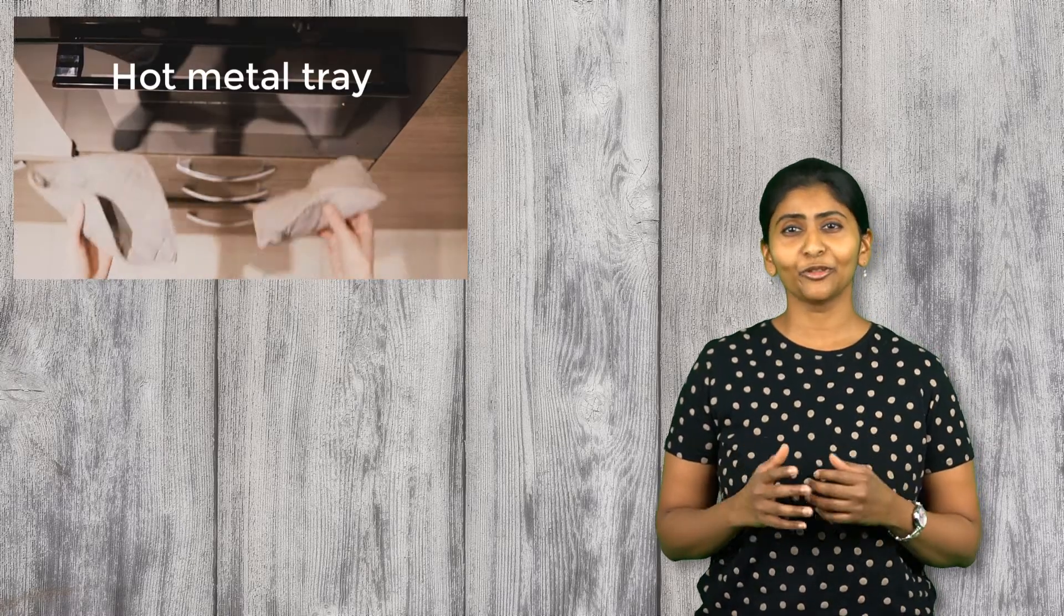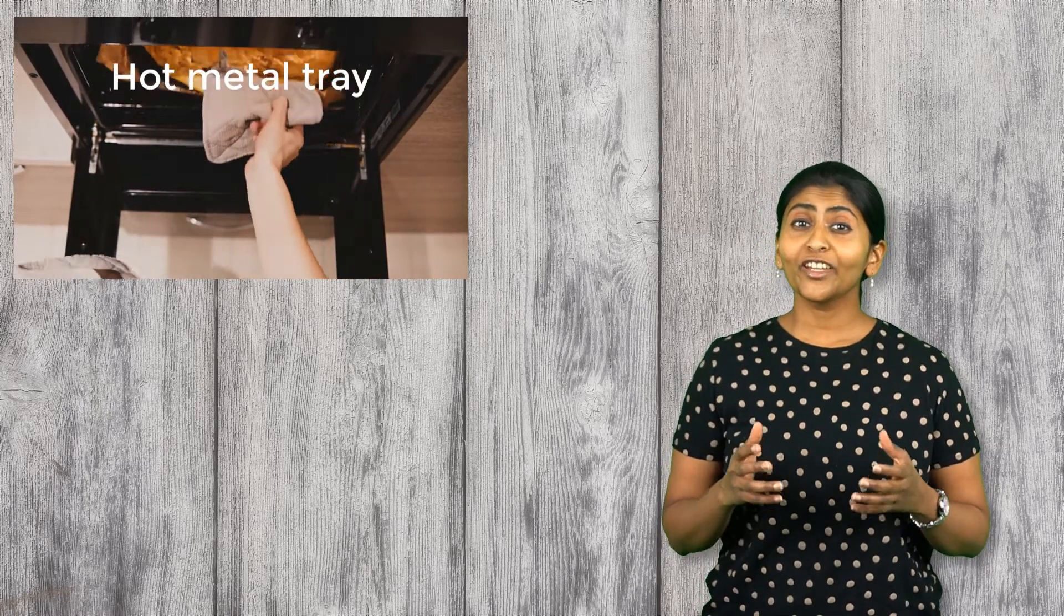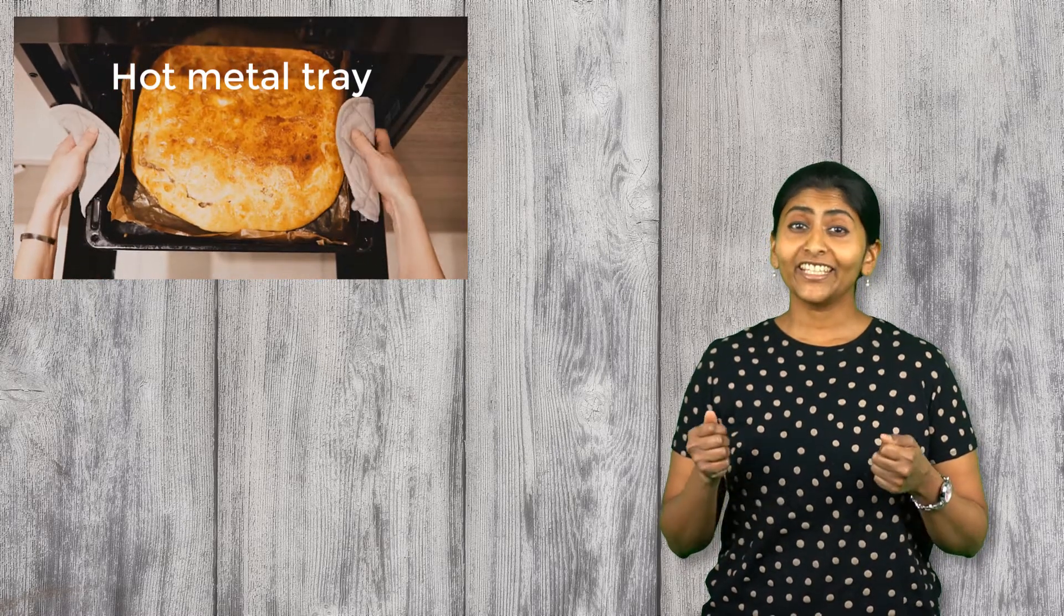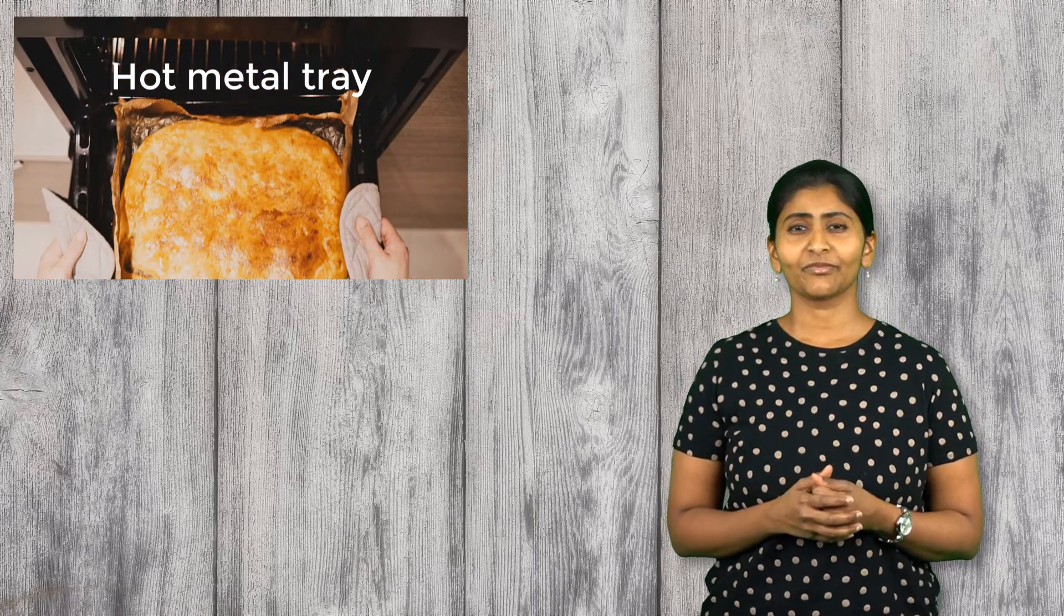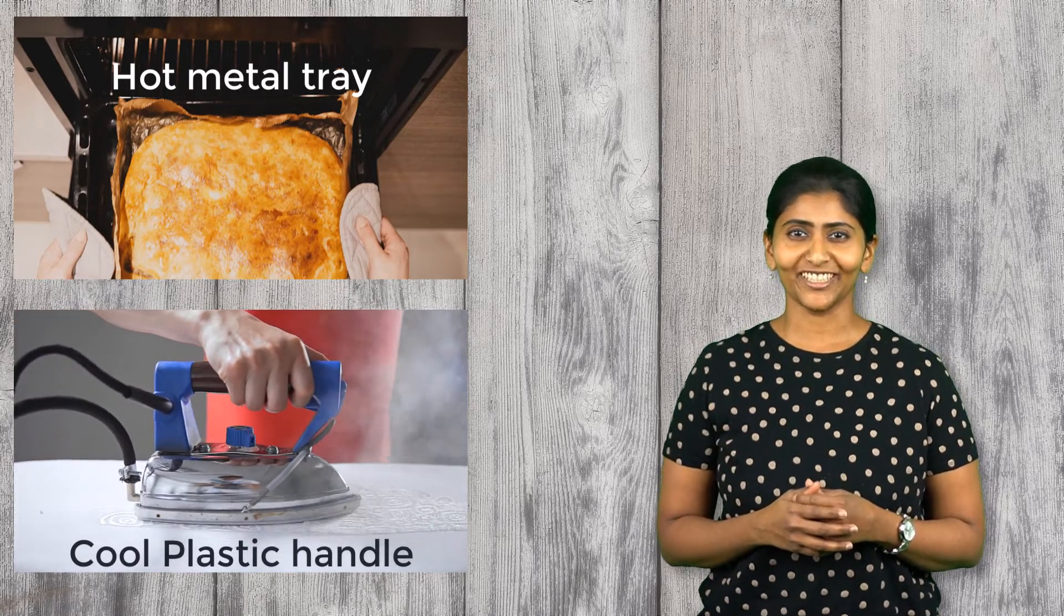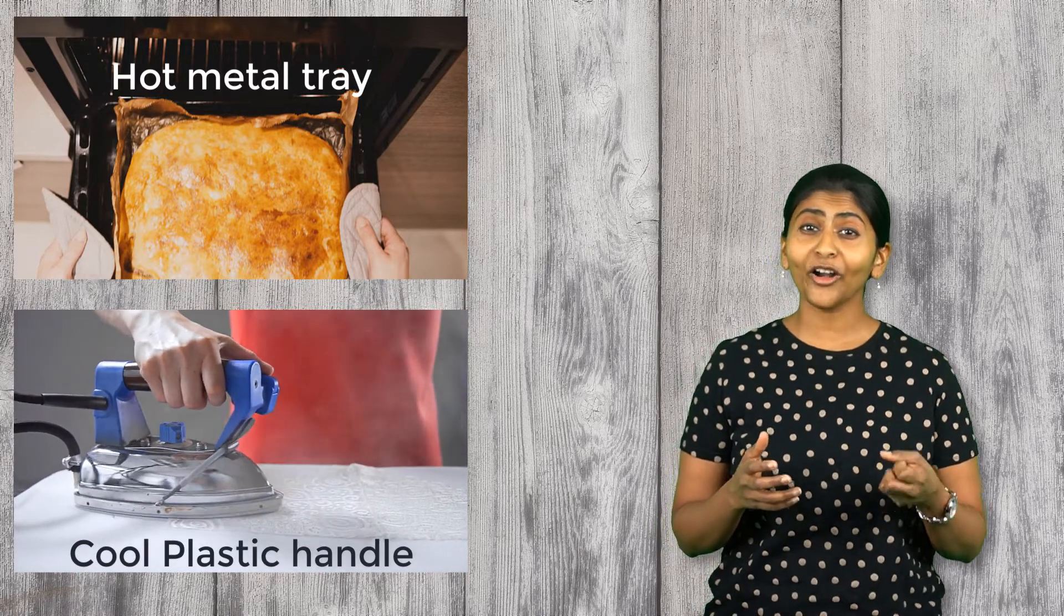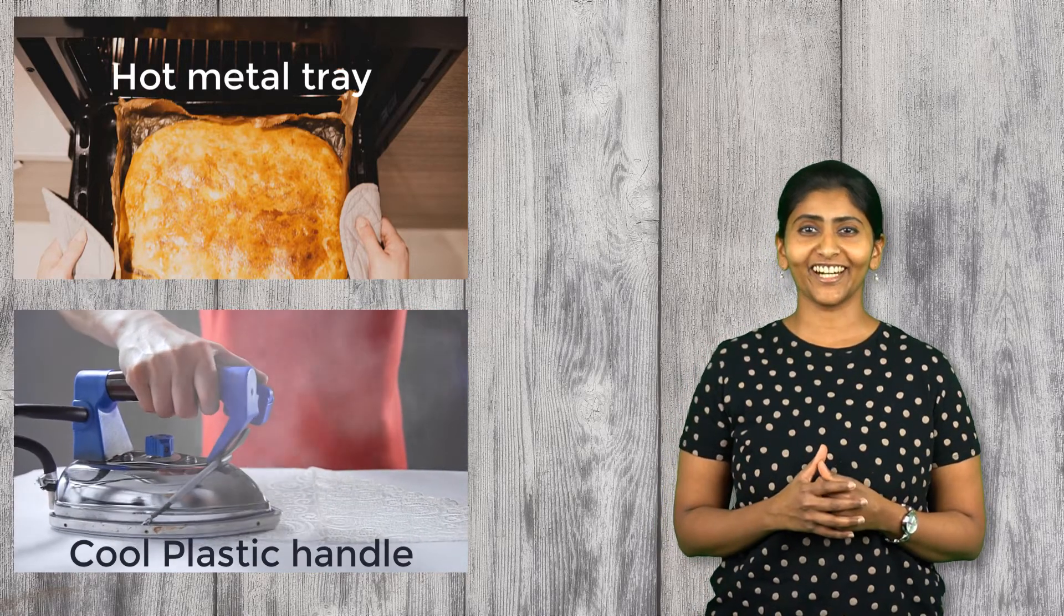Based on our experience, we know that some materials conduct heat at a faster rate as compared to others. For example, metals are very good conductors of heat. That is why we always use oven mitts when taking a baking tray out of the oven. Plastic on the other hand is not a good conductor of heat, which is why we can hold the handle of a hot iron without burning our hands.